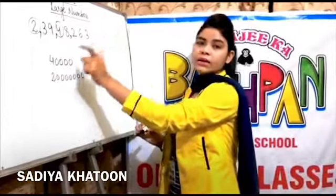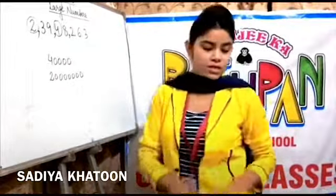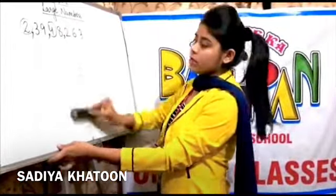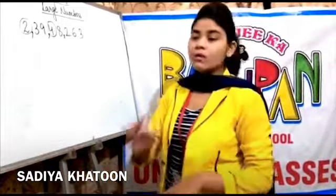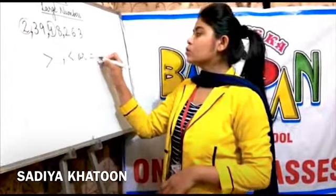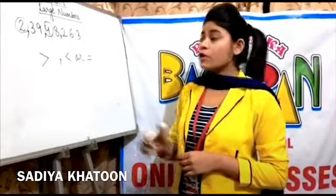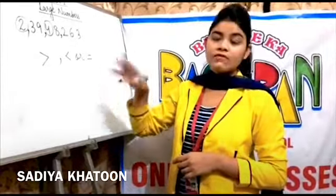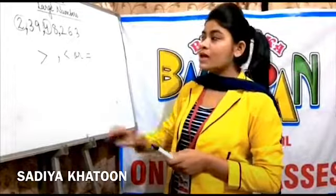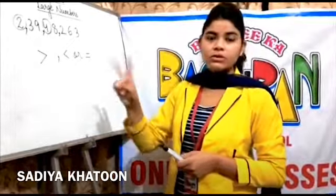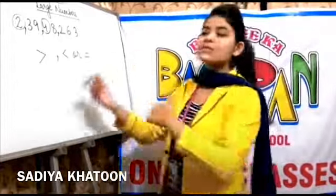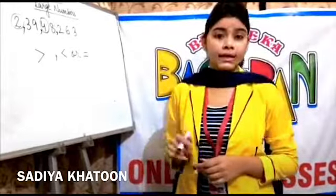This is the place value of 2 in this particular number — that is the second topic. The next topic is comparison of numbers: you compare two numbers using greater than, less than, or equal to symbols. You are already aware of these symbols from previous classes. Based on comparison comes the next topic: ascending and descending order.